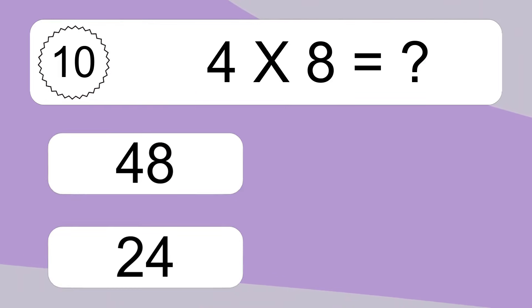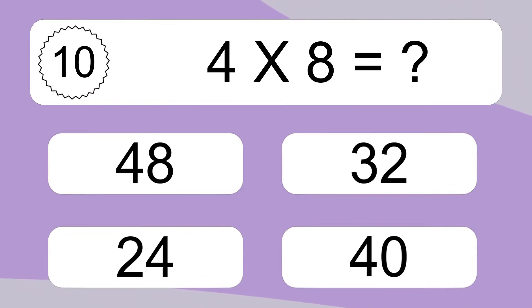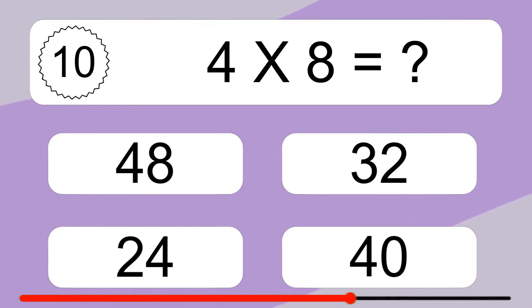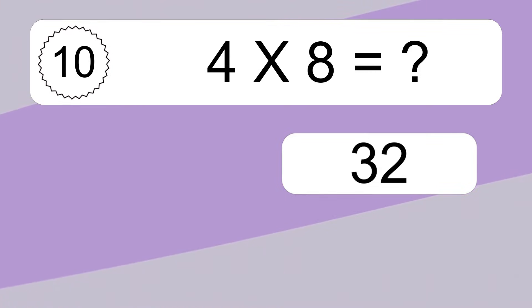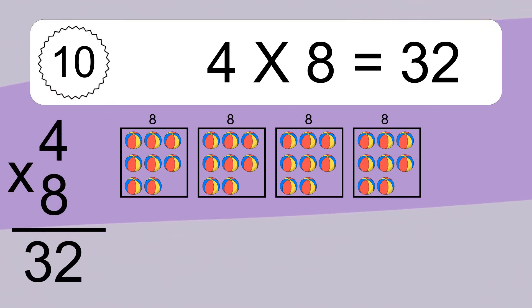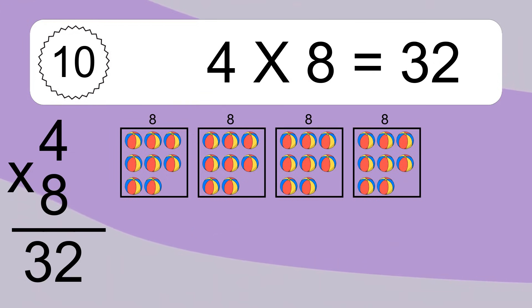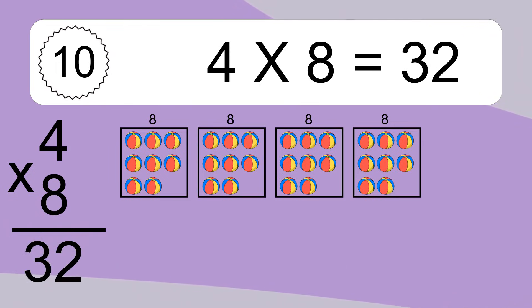4 times 8 equals what? 4 times 8 equals 32. We have 4 boxes, and each box has 8 colorful balls inside. If you count all the balls in all the boxes together, you will have 4 times 8 balls. This equals 32 balls.